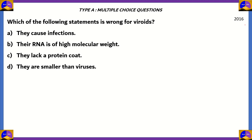Let's look at the final question of this episode, also asked from 2016 — you can see the sheer volume of questions from this chapter, which tells you it is extremely important. 'Which of the following statements is wrong, especially for viroids?' A) They cause infections. B) Their RNA is of high molecular weight. C) They lack a protein coat. D) They are smaller than viruses.